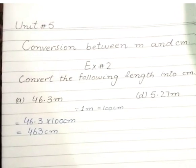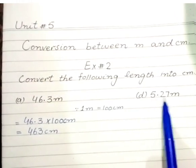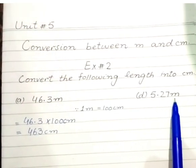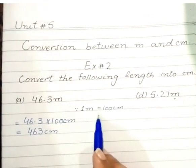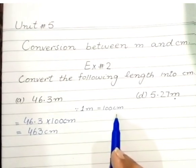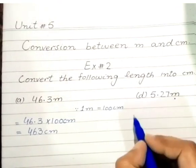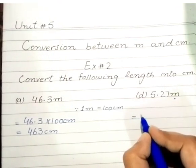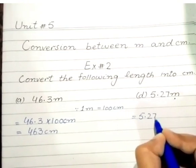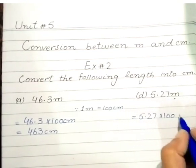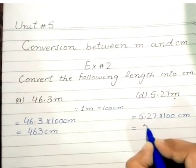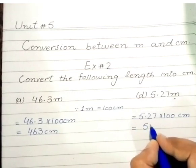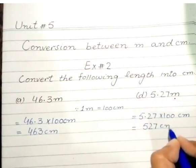Let's solve another question. 5.27 meter. How do we change this into centimeter? We know that 1 meter is equal to 100 cm. We multiply it with 100 cm. The given length is 5.27. Let's multiply with 100 cm. So, the answer is 527 cm.